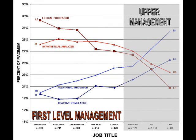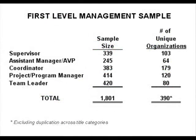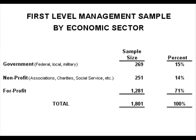We can now try a little stress test. There are different first-level titles, but all occupy roughly the same hierarchical position. The issue is whether we'll see the same processes operating here as we saw at the macro level. First-level management in our sample included 1,801 executives from 390 different organizations, including government, non-profit, and for-profit organizations. Statistically, this subset is big and diverse enough to be treated independently.